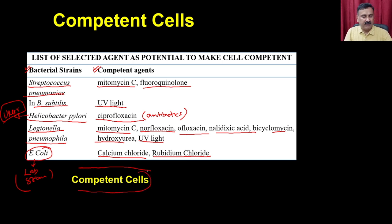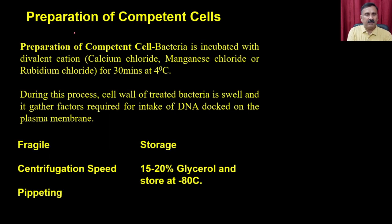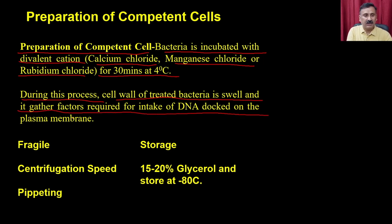As an example of how to make competent cells, let's look at the E. coli calcium chloride method. Bacteria are incubated with a divalent cation like calcium chloride, magnesium chloride, or rubidium chloride for 30 minutes at 4°C. During this process, the cell wall of the treated bacteria swells and gathers the factors required for DNA intake, which then docks onto the plasma membrane.